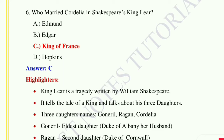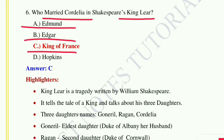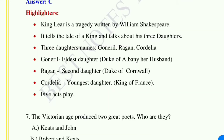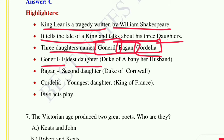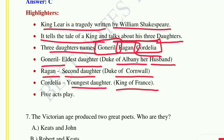Question number six: Who married Cordelia in Shakespeare's King Lear? Option A: Edmund, option B: Edgar, option C: King of France, option D: Hopkins. The correct answer is option C, King of France. King Lear is a tragedy by William Shakespeare about a king and his three daughters: Goneril (eldest, husband: Duke of Albany), Regan (second, husband: Duke of Cornwall), and Cordelia (youngest), who was married by the King of France. The play has five acts.